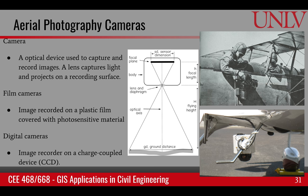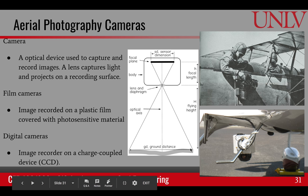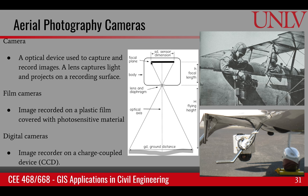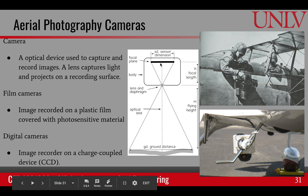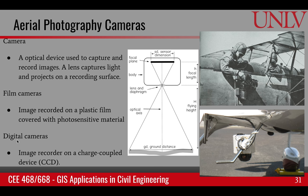A camera is an optical device used to capture and record images. A lens captures the image of a ground surface onto a thin recording surface, which varies based on the type of camera. In film cameras, this recording surface is a plastic film coated with a photosensitive material, and the image is projected onto it for a small duration of time. In digital cameras, this surface is called a charged coupled device, which is a semiconductor material capable of recording projected electromagnetic radiation. In both cases, the image of the ground surface is captured on the photograph.